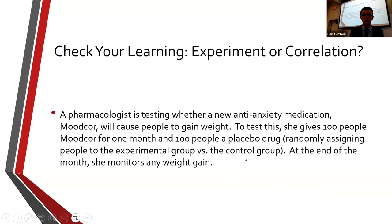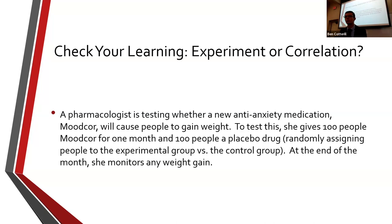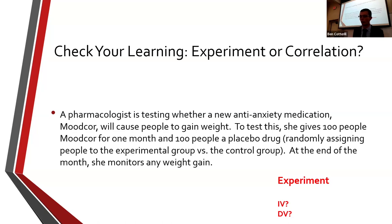A pharmacologist is testing whether a new anti-anxiety medication will cause people to gain weight. She gives 100 people this new medication for a month, and 100 people a placebo drug, then monitors weight gain. Is this a correlation or an experiment? It's an experiment — there's a clear IV and a clear comparison across two conditions. The IV is the drug — one group has the drug and one doesn't. The dependent variable is weight gain.